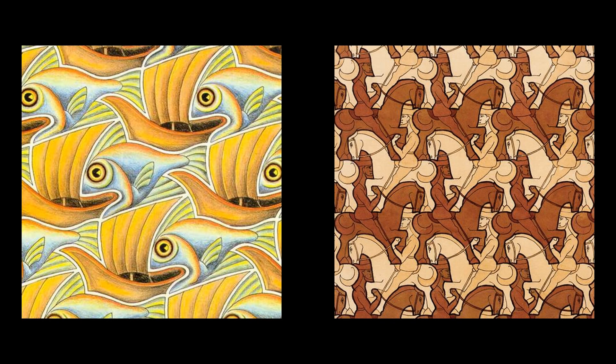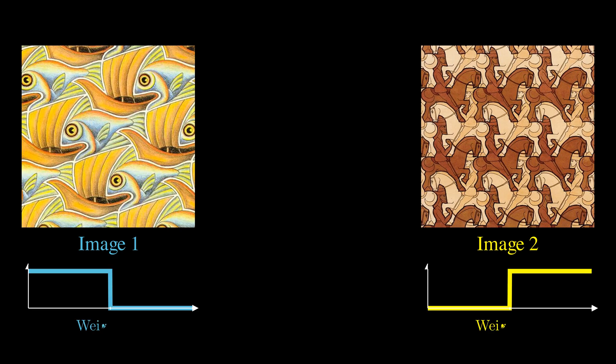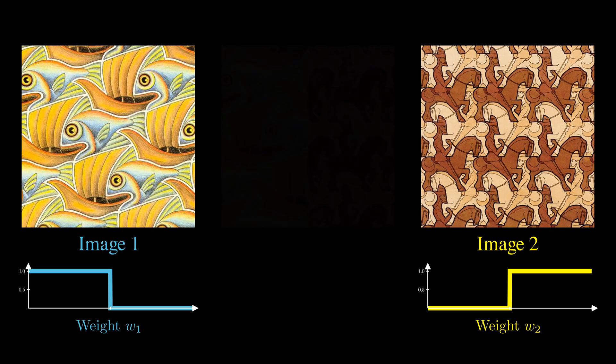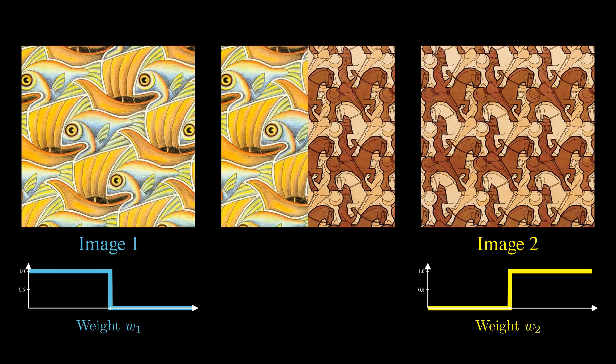Let's illustrate the problem with a simple example. Suppose we want to blend two images into one. A straightforward approach is to use a simple weighting function, w1 and w2, to combine them. In this case, we take the left side of image 1 and the right side of image 2. But this does not look great. The transition is too harsh.